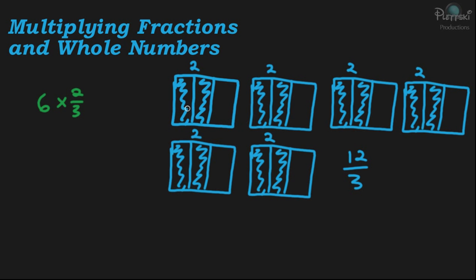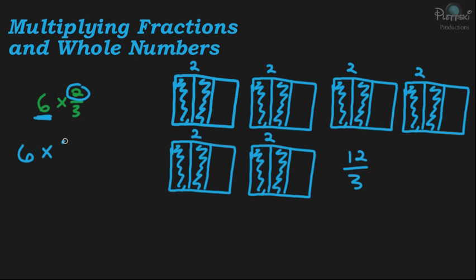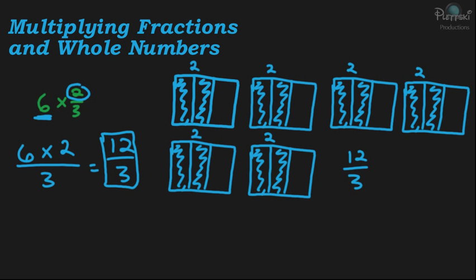So if we multiply two-thirds times six, we have twelve-thirds. A shortcut to this, now that you've seen it visually, is to take the whole number and multiply it by the numerator. So we do six times two, which is twelve, and we put that product over the denominator. So six times two-thirds is twelve-thirds. And that's how we multiply whole numbers and fractions.